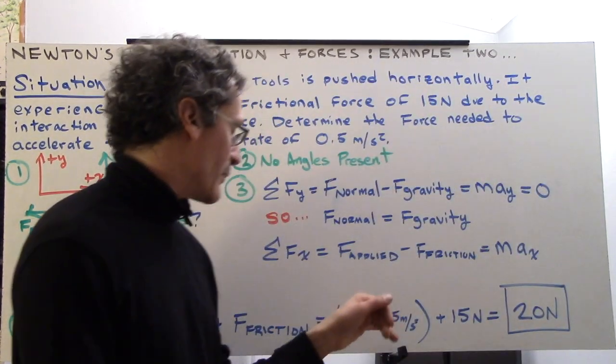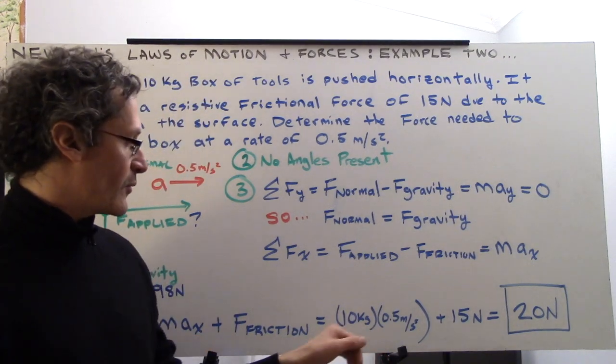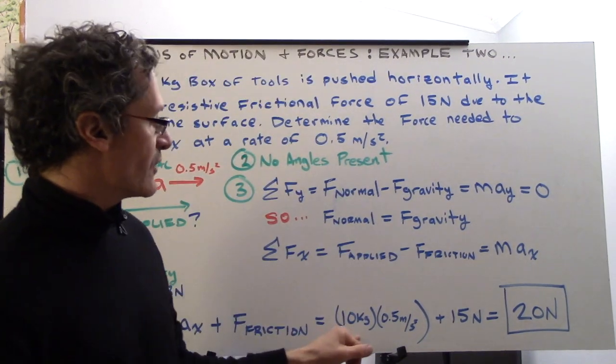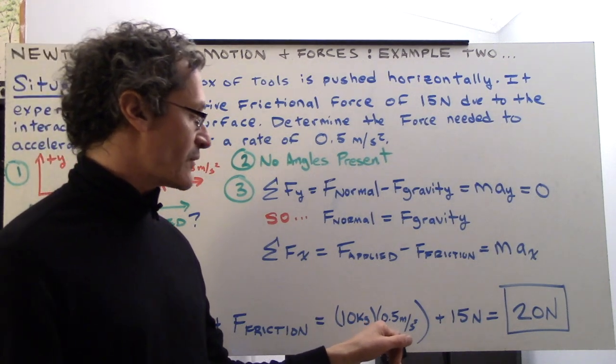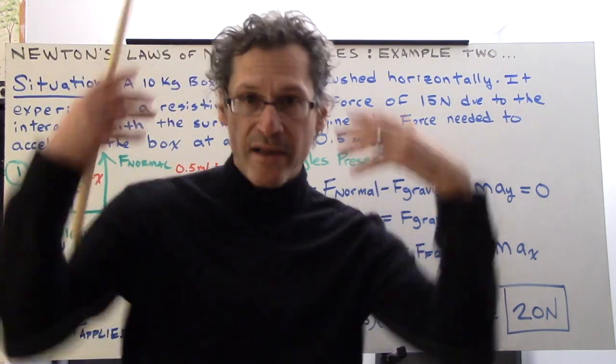Let's plug it in. Now we've got it solved for our variable, which is force applied, 10 kilograms times 0.5 meters per second squared, 5 plus 15. It's 20 newtons.